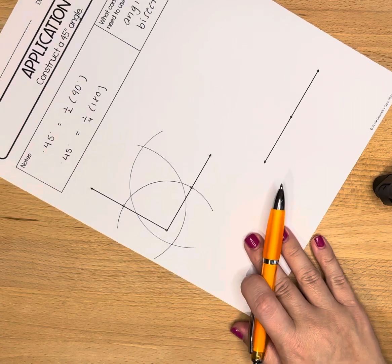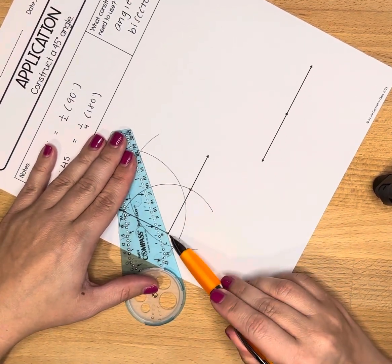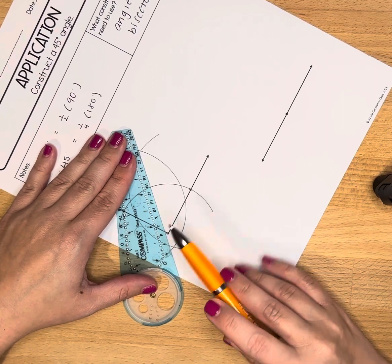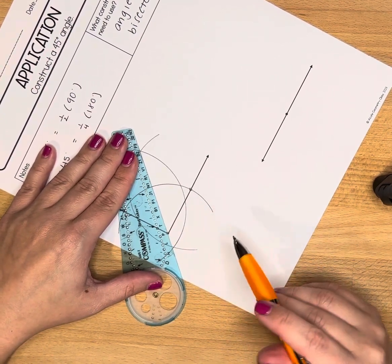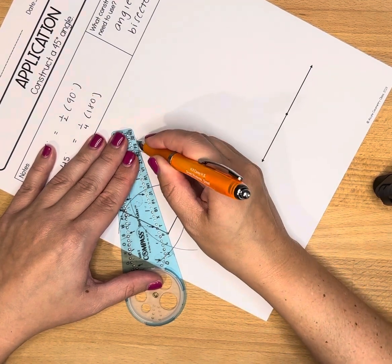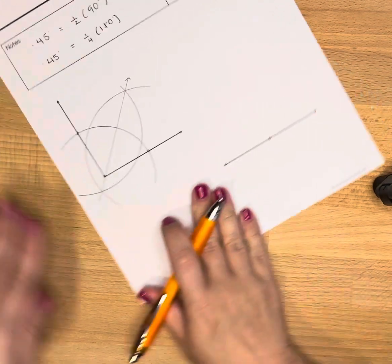I'm just going to rotate my paper a bit, and we are going to use a straight edge to connect them. It should also go through that vertex of the angle. And there's our angle bisector.